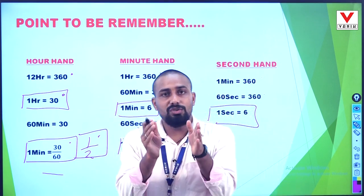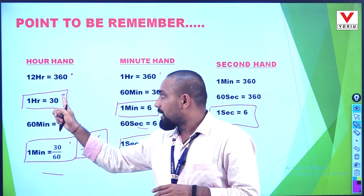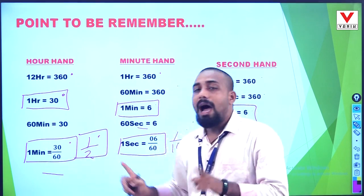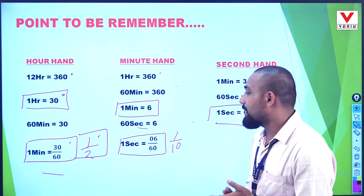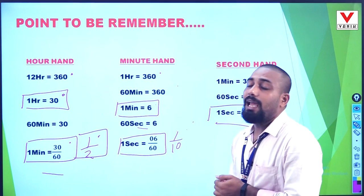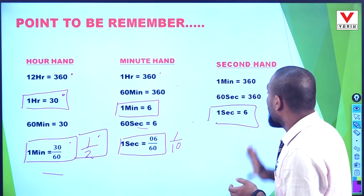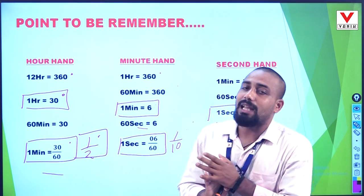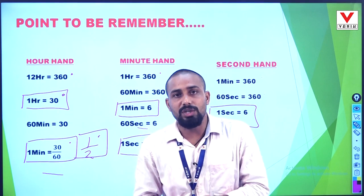So to summarize what we have in our box: the hour hand covers 30 degrees per hour and half a degree per minute. The minute hand covers 6 degrees per minute, or 1 by 10 degrees per second. The second hand covers 6 degrees per second. With these values, you can easily solve the questions.